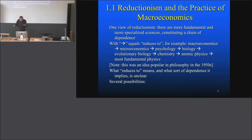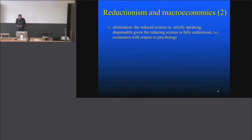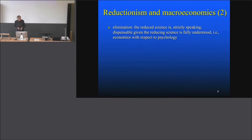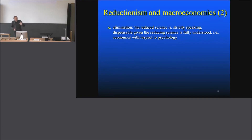So what 'reduces' means: Hoover says there are several possibilities — he sees three. One is elimination: that the reduced science is, strictly speaking, dispensable given the reducing science is fully understood. For instance, economics with respect to psychology: if we fully understand psychology, then we can eliminate microeconomics, because everything we can say about choices can be said in psychology. And this is, by the way, one of the main motives of Hoover's reluctance to accept reductionism.